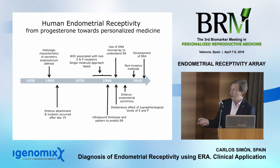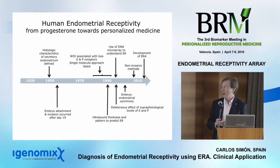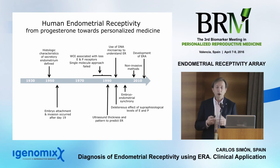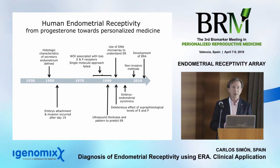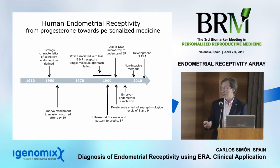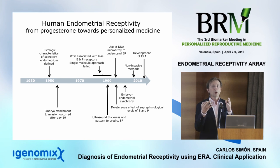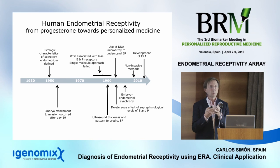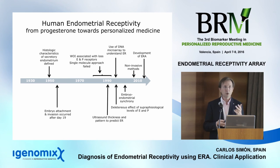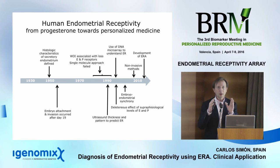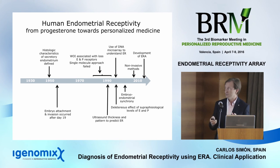We also worked on whether IVF affects implantation because of the pharmacological levels of estradiol and progesterone. Nowadays, because of vitrification potential, we are working on whether frozen embryo transfer could be better than fresh transfer. In the 1990s, we came together with a very simple concept: you need synchrony between a receptive endometrium and a chromosomally normal viable embryo — they must coincide in time. That synchrony is what the test is about.